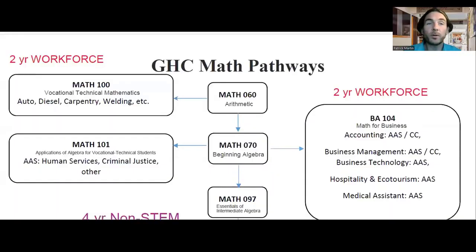Different workforce degrees have different math requirements: either Math 100, Math 101, or BA 104. Math 100 for the trades, Math 101 for Associate of Applied Science in Human Services, Criminal Justice, and more. BA 104 Math for Business for Accounting, Business, and more.